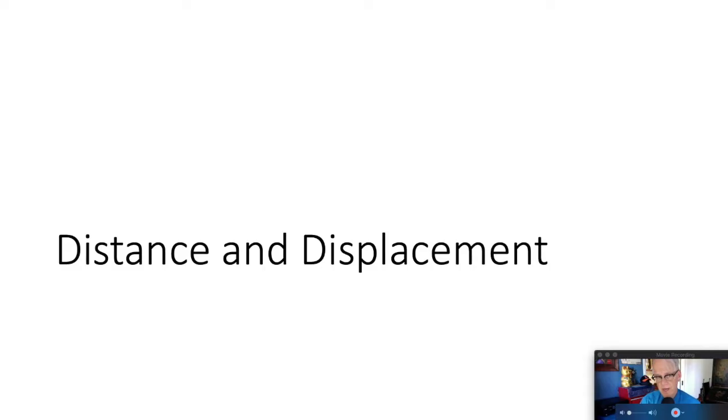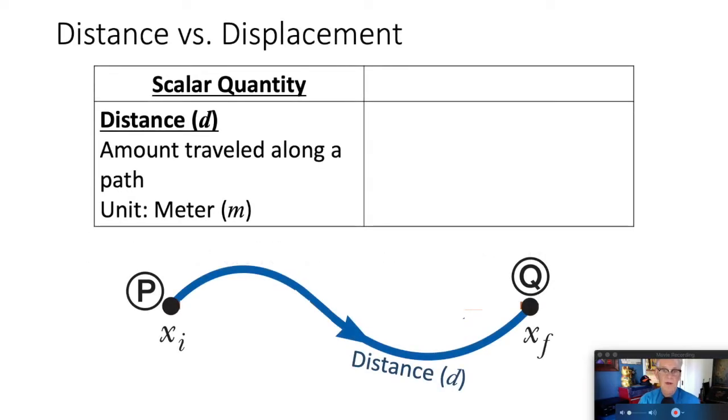Now, we're ready to compare distance and displacement. Distance is going to be defined as the amount traveled along a path. We'll use a lowercase d for the variable, and the international system unit is going to be the meter. If we move from point P to point Q, and we go along the blue path, the length of that blue path is the distance.